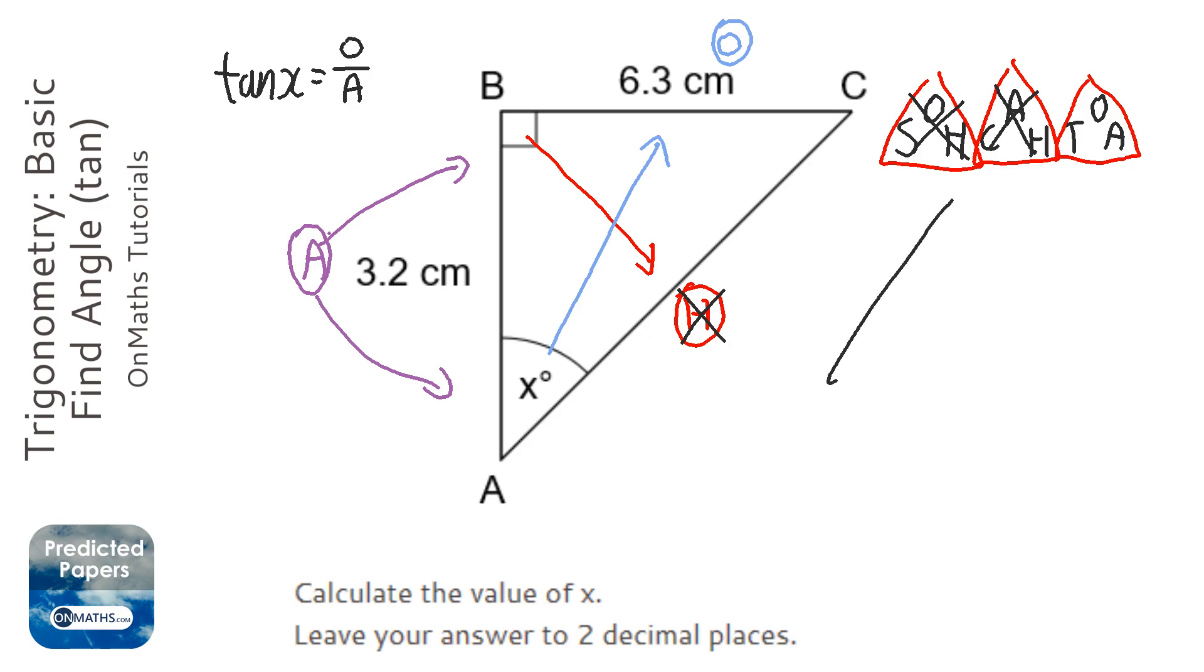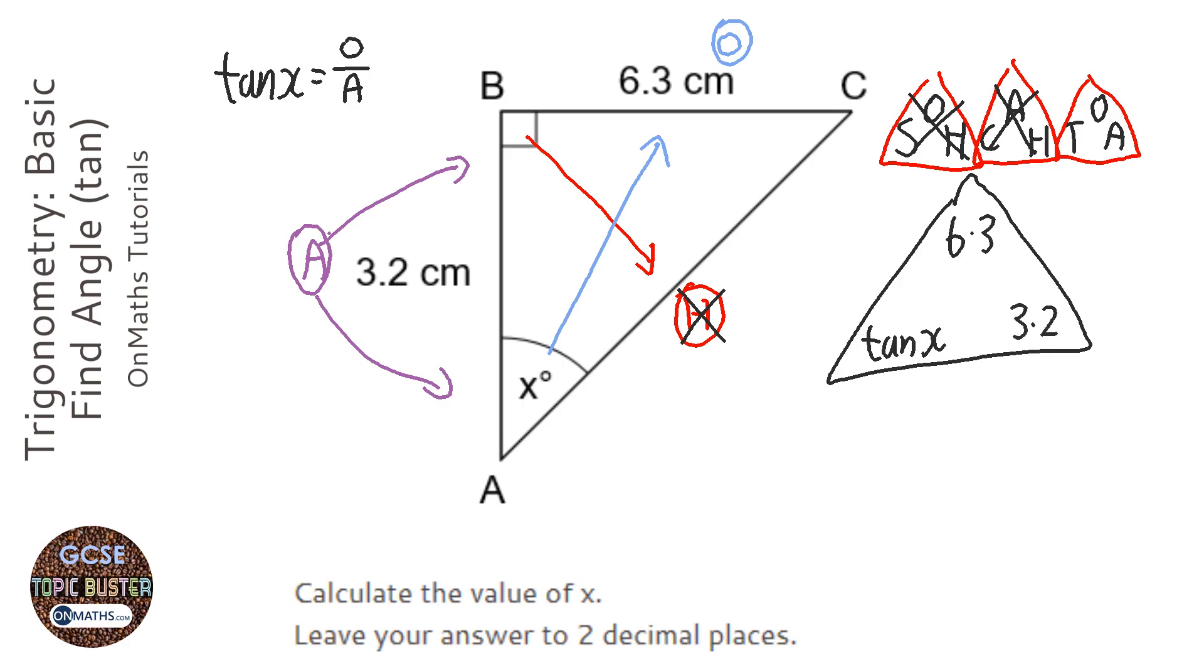T stands for tan of the angle, which in this question is tan x. O is the opposite, which is 6.3, and A is 3.2. So we have 6.3 over 3.2 equals tan x.